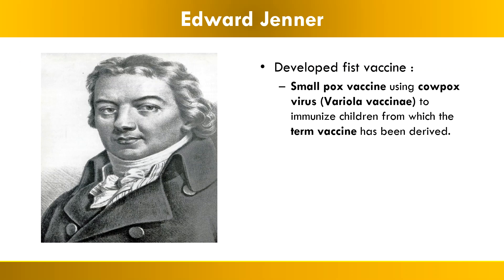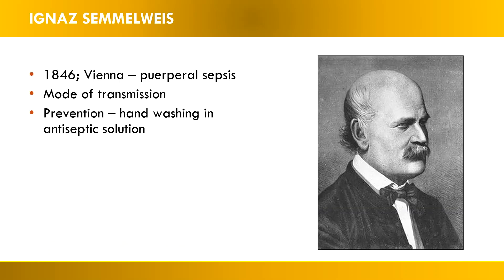The second scientist is Edward Jenner, known for developing the first vaccine. He discovered the smallpox vaccine. What he did was use cowpox virus and introduced it in children, which provided immunity against the smallpox virus. He is the person who first coined the term 'vaccine.' Edward Jenner's main contribution is therefore towards vaccination.